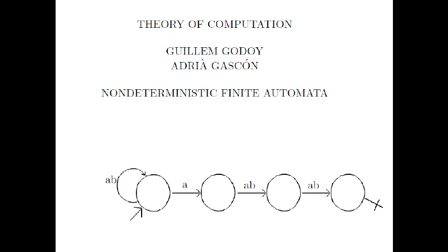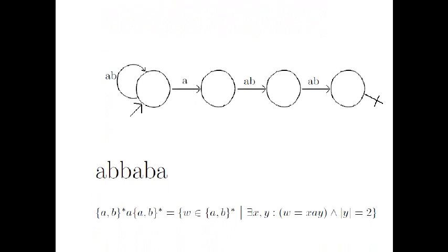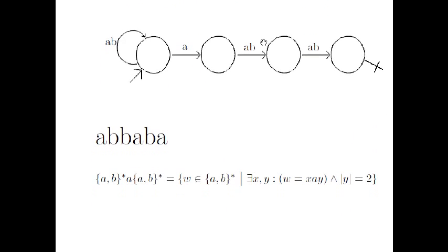It sounds weird — let's see an example. Here we have a non-deterministic finite automaton. It looks like a deterministic one at first look, but it has some differences. From this state there are two transitions defined for A: one going to the first state, and one going to the second state.